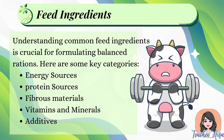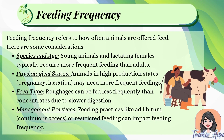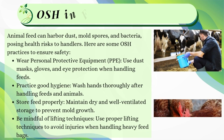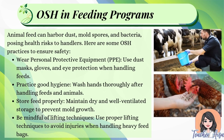Feeding frequency refers to how often animals are offered feed. Considerations include: species and age — young animals and lactating females typically require more frequent feeding than adults; physiological status — animals in high production states like pregnancy and lactation may need more frequent feedings; feed type — roughages can be fed less frequently than concentrates due to slower digestion; and management practices — feeding practices like ad libitum or continuous access, or restricted feeding, can impact feeding frequency.